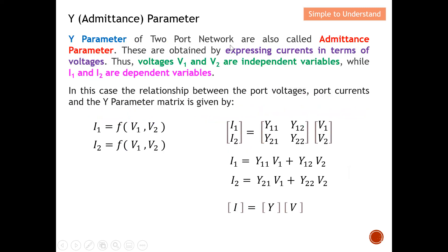Y parameters of a two-port network are also called admittance parameters. They carry the SI unit called siemens, which is one over impedance, or one over ohms. These are obtained by expressing current in terms of voltage — you can see that current is a function of voltage, where I1 and I2 are each functions of V1 and V2.